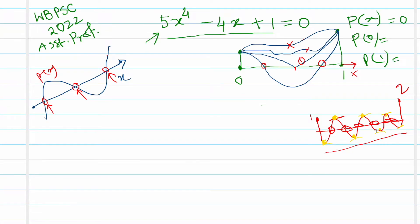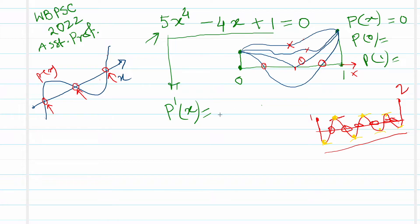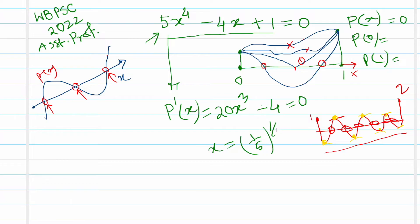This is an important and well-known fact. Finding the critical points of p(x) tells us where bending occurs. Computing p'(x) = 20x³ - 4 and setting it to zero, we solve for x and find x = (1/5)^(1/3) as the critical point.